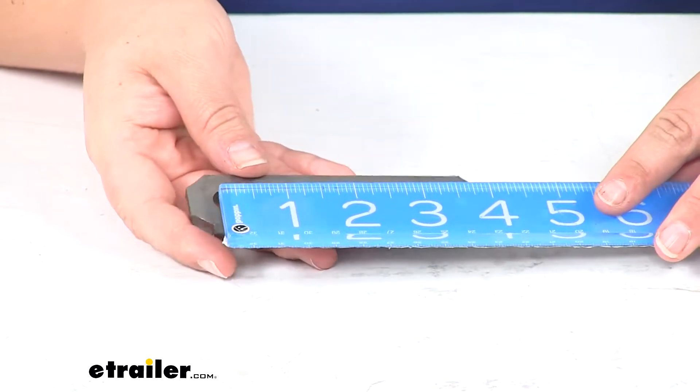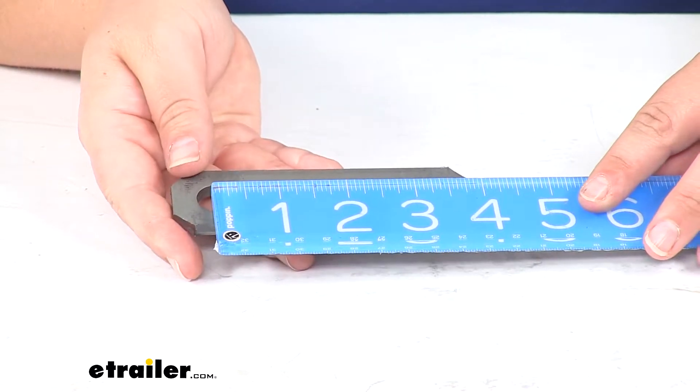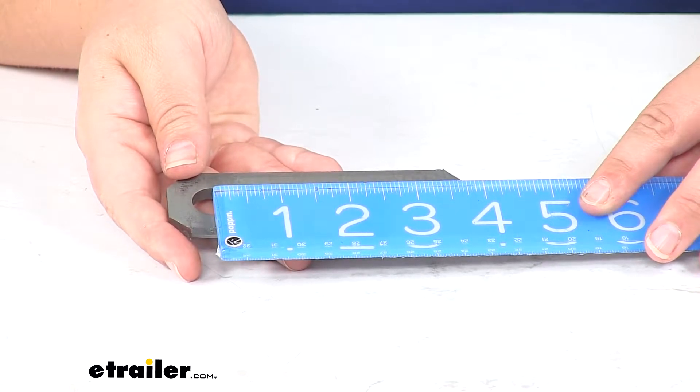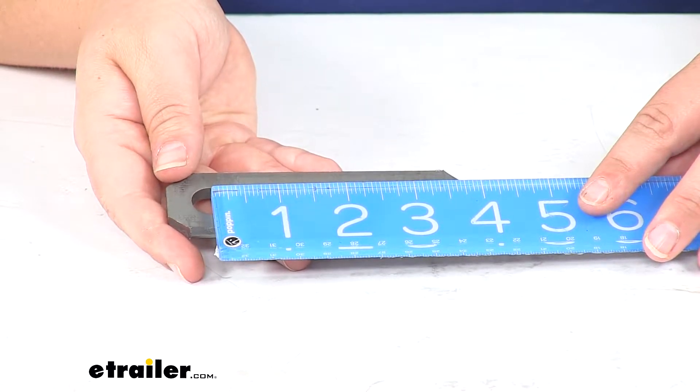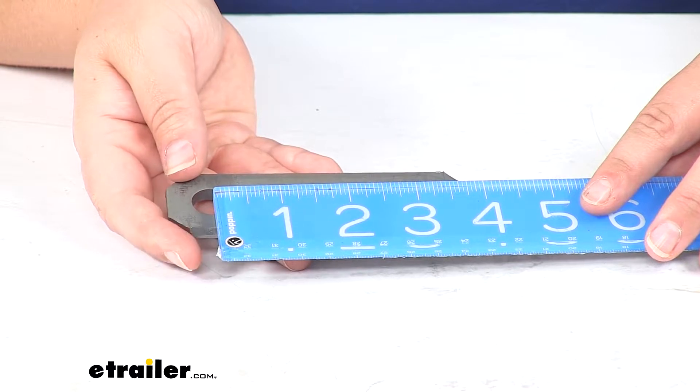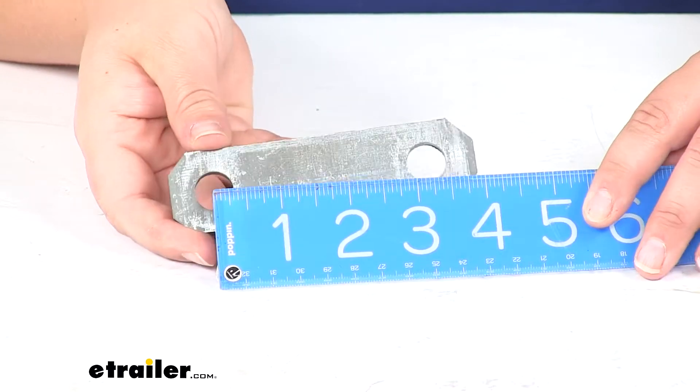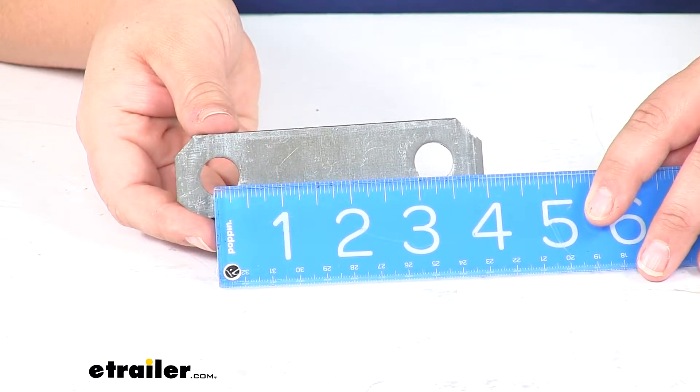The distance from the center of one hole to the center of the other is about three and a quarter inches or three and an eighths inches. You can see there.